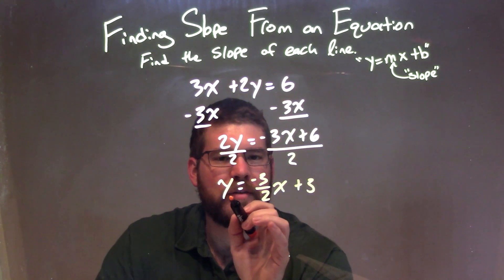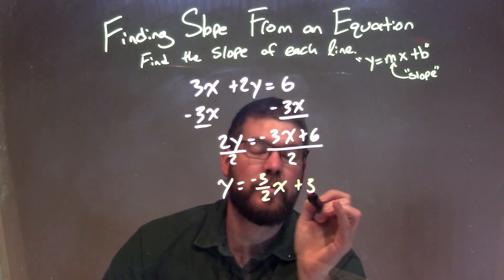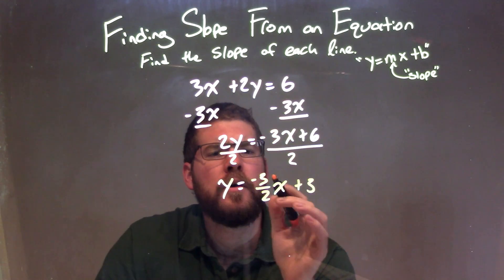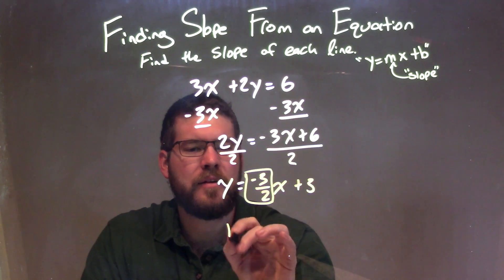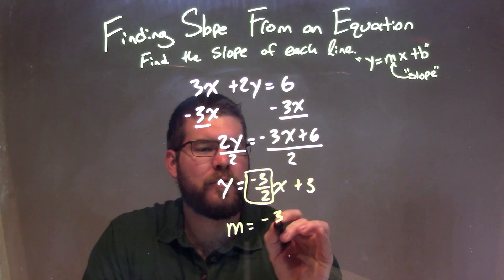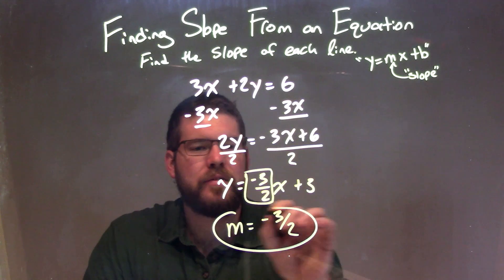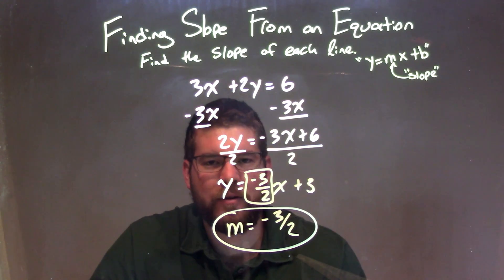It is now in our slope-intercept form, y equals mx plus b. So I need to find my m value, which is the coefficient in front of x. Our m value is negative three-halves, and that is our final answer for our slope.